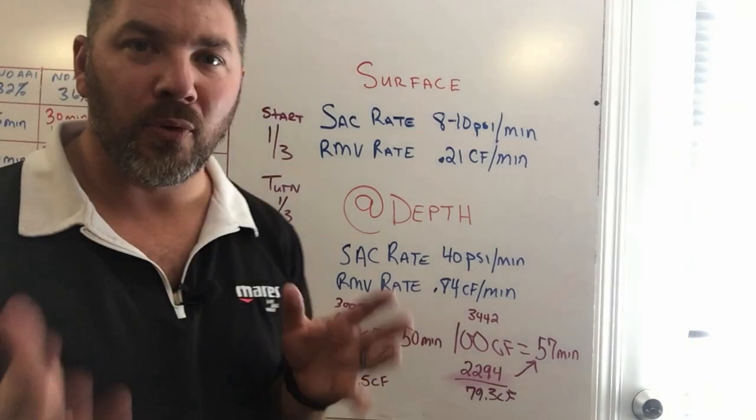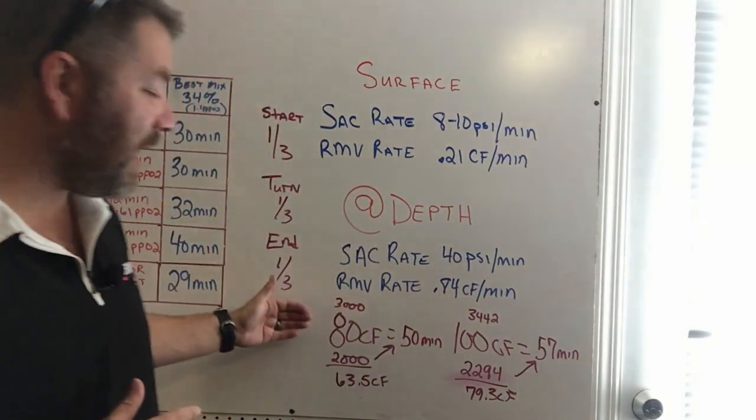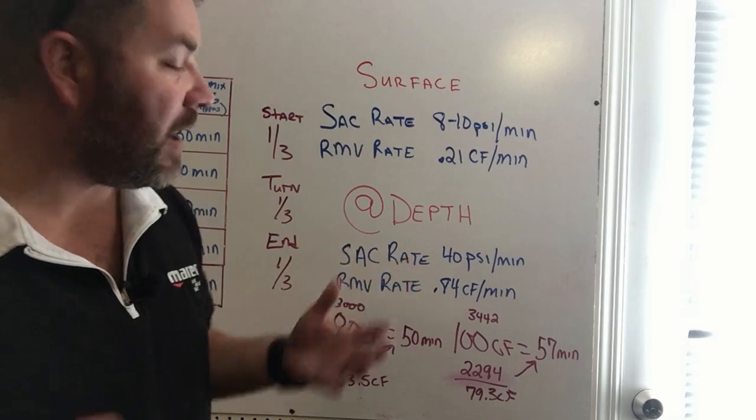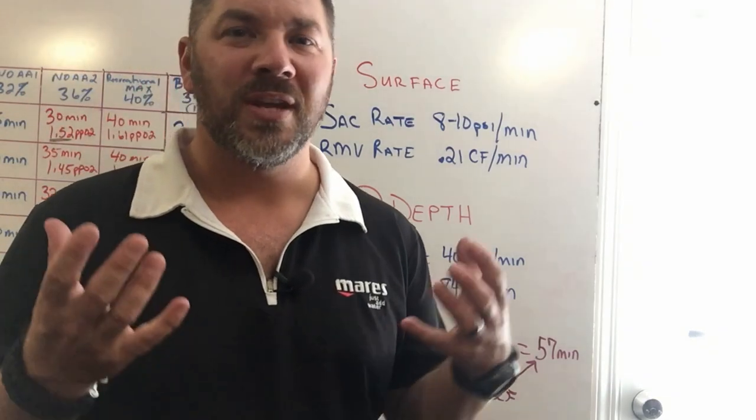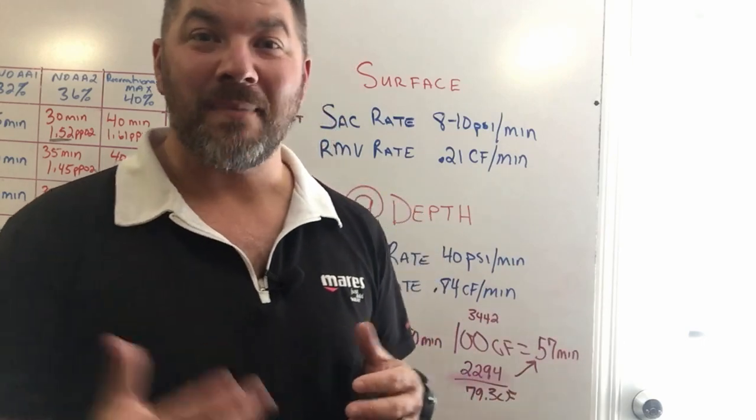One's 80, one's 79.3, pretty much right there. Now all that being said, the 80 cubic foot with full gas, if I used all the gas I'd be out. The 100 cubic foot still gives me a little bit extra gas, almost 21 cubic feet extra of gas to make it back to the surface.